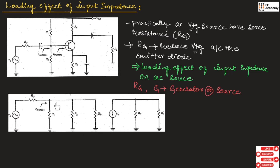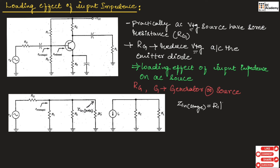This figure shows an AC equivalent circuit of an amplifier circuit along with resistance RG. The input impedance measured at the base side is known as Z_in_base. Z_in_stage can be written as R1 parallel with R2 parallel with beta RE dash, and Z_in_base can be written as beta RE dash.